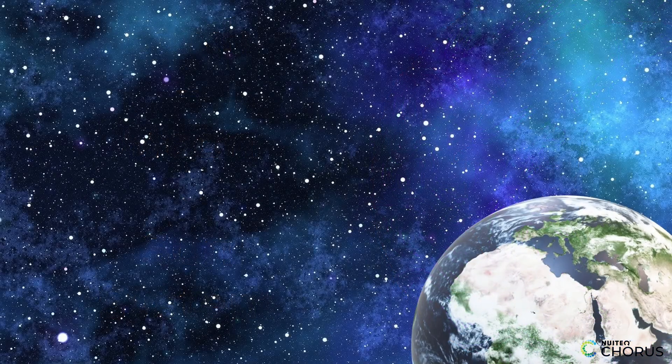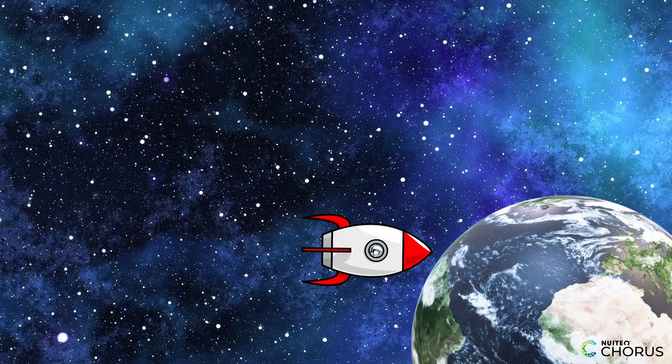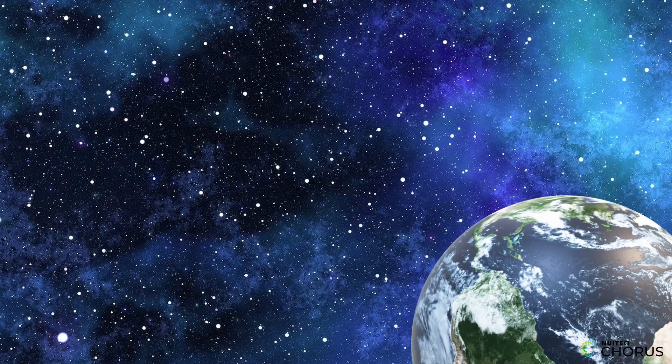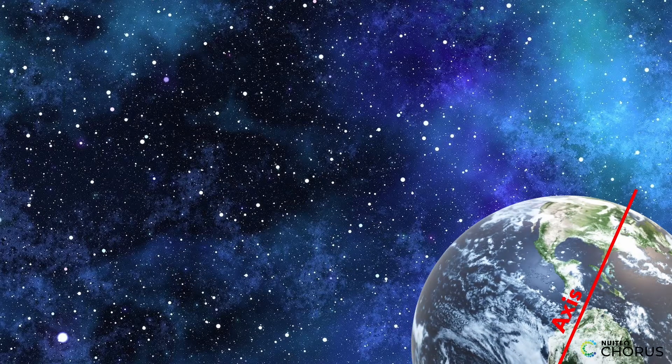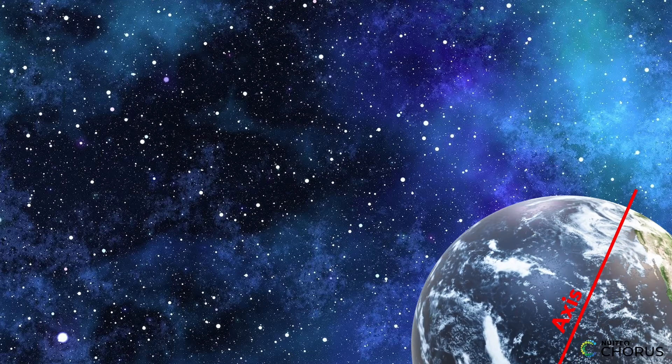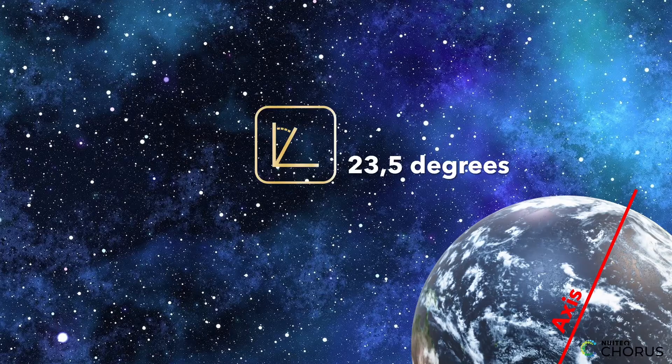Imagine you're an astronaut on a spaceship flying around Earth, and you're seeing some really cool things. You see the Earth spinning on its axis, which is like a giant pole sticking out of the planet. And you notice that the pole is tilted at an angle.